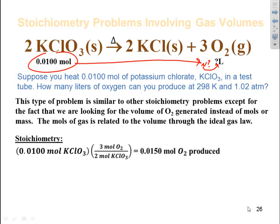So first we're going to do the stoichiometry. 0.01 moles of potassium chlorate. There's a 3 to 2 mole ratio. I put my potassium chlorate in the denominator to get the units to cancel. Multiply that out. Cancel my units. I end up with 0.0150 moles of O2 being produced. So now I know my n.